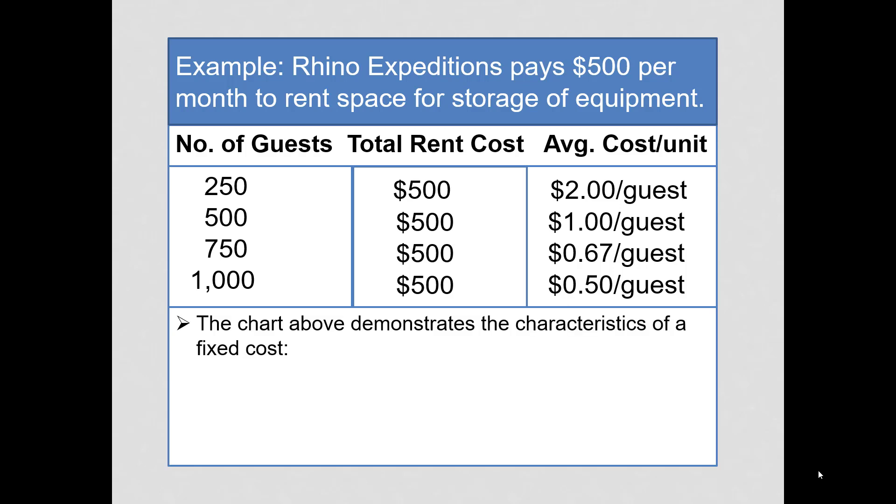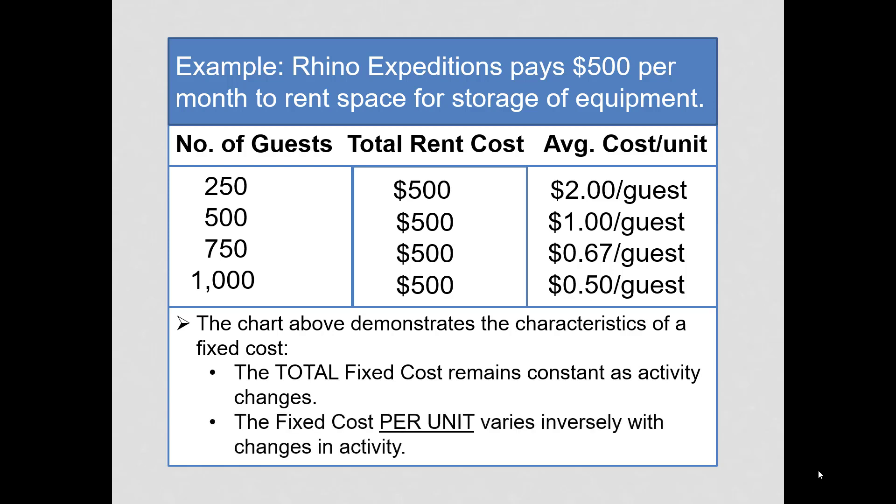The chart above demonstrates two characteristics about fixed costs. First, the total remains constant as activity changes. But secondly, fixed cost per unit varies inversely with activity. Every time an additional guest is taken on an excursion, the cost per unit or cost per guest will change.